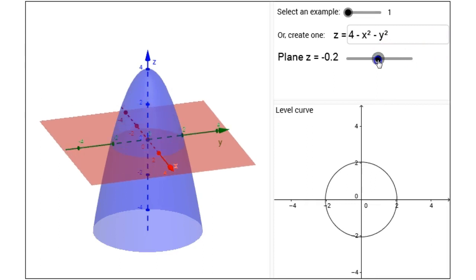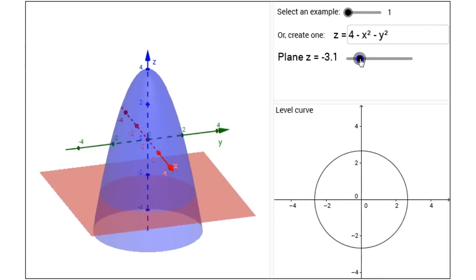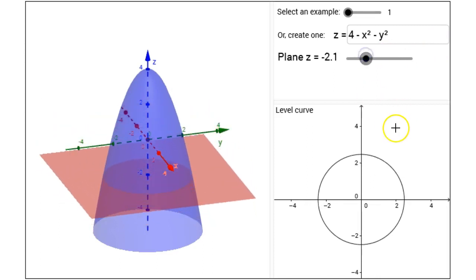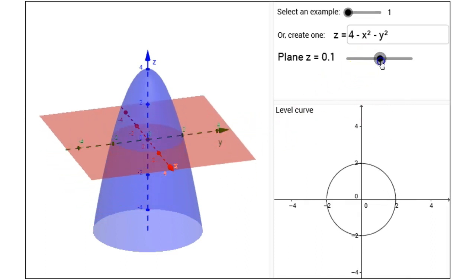And by dragging the different z values I can see how the different level curves correspond to points in space where the plane cuts the surface.